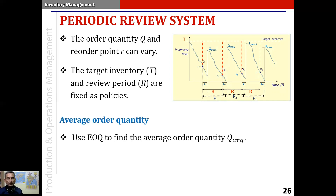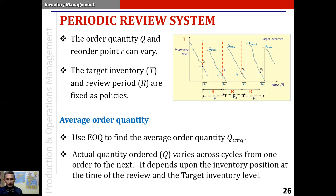The first question we ask is: how do we compute the average order quantity? We talk about the average order quantity because the actual order quantity is variable. We again use the EOQ formula — the EOQ formula is used to find the average order quantity, Q-average.